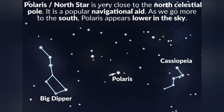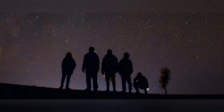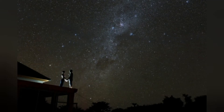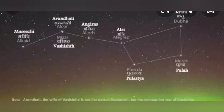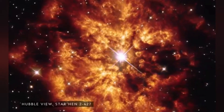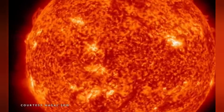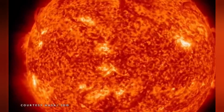In ancient times, people used to determine directions during the night with the help of stars. The North Star indicates the North direction and is also called the Pole Star. It always remains in the same position in the sky. We can locate the position of the Pole Star with the help of Sapta Rishi — if an imaginary line is drawn joining the pointer stars and extended further, it will point to the Pole Star.